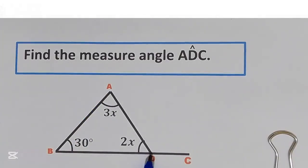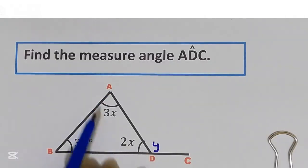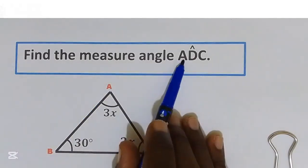I'm going to call it as angle y. First we are going to use triangle ABD to get the value of x, then we are going to find angle ADB. After that, we are going to use the concept of straight line to get the value of angle y, which is angle ADC.